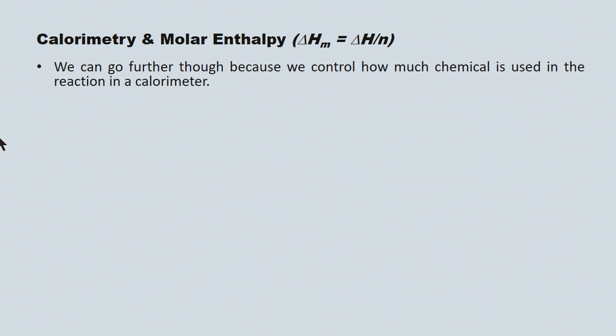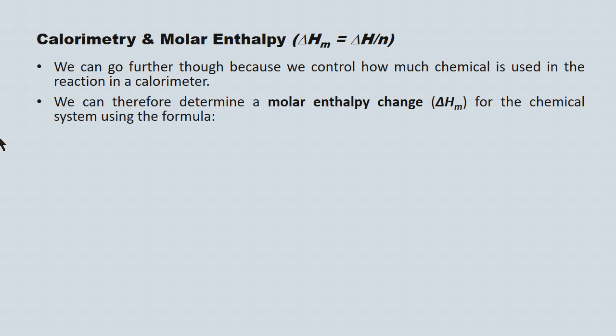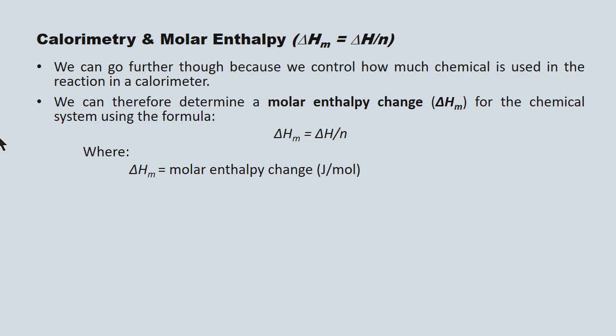We can go one step further because we control how much of the chemical is used in the reaction, and therefore we can determine a molar enthalpy change — a delta HM — for the chemical system using the formula delta HM equals delta H over N. Delta HM is our molar enthalpy change, delta H is our total enthalpy change, and N is the number of moles of chemical used.